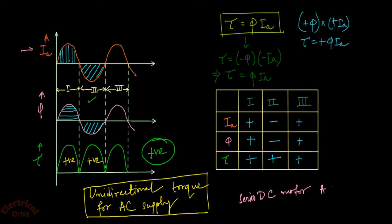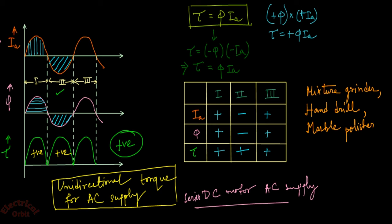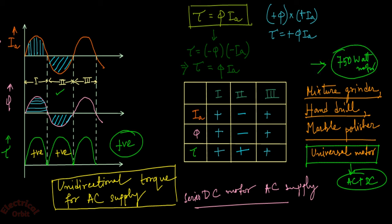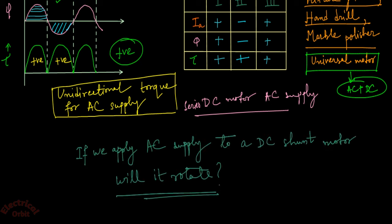This means we can run a DC series motor by giving it an AC supply. Its applications include mixture grinders, hand drills, and marble polishers. Because it can run on both AC and DC, this motor is called a universal motor. One important thing to remember: it is not used for motors above 750 watts. Now, as a question for the comment section — if you apply AC supply to a DC shunt motor, will it rotate? I will answer that in another lecture. Thank you.